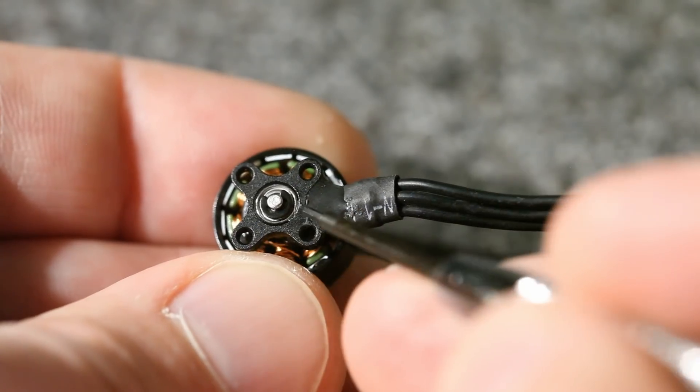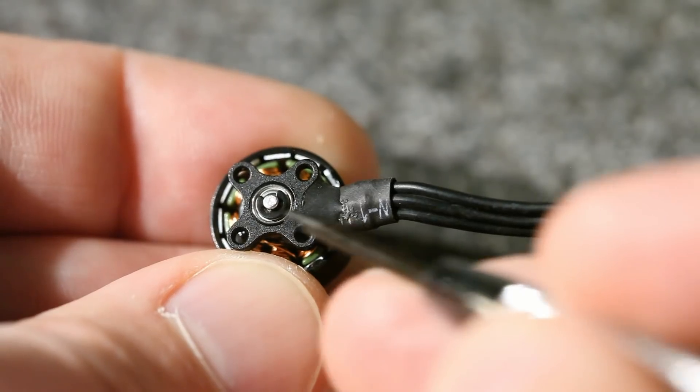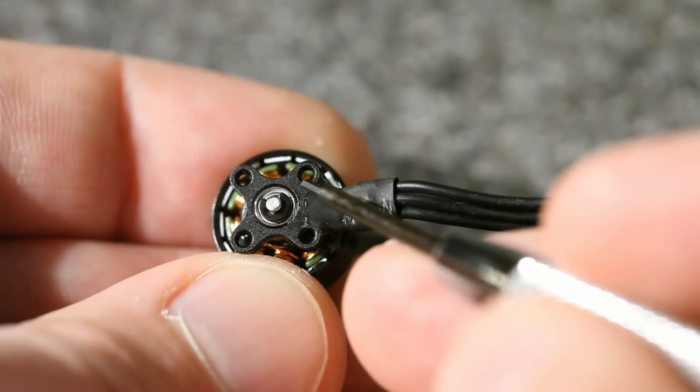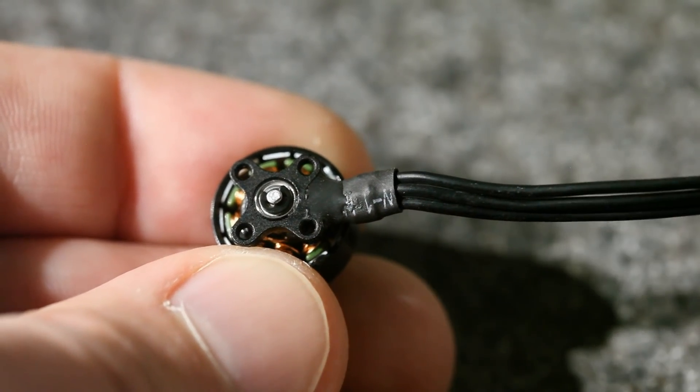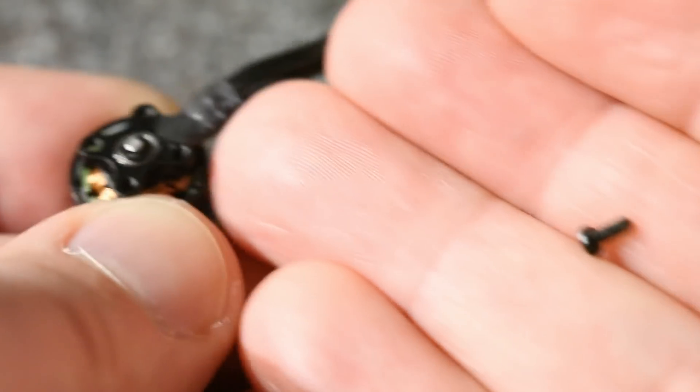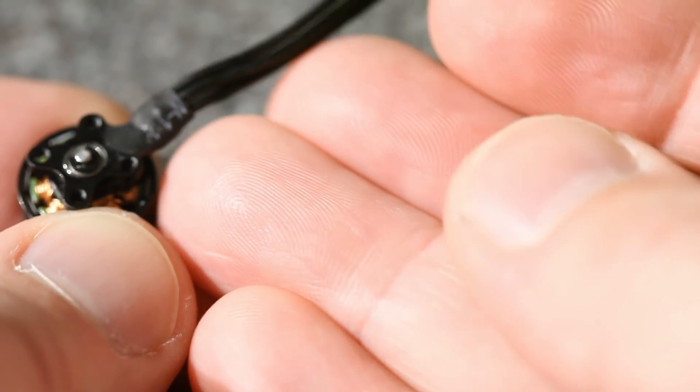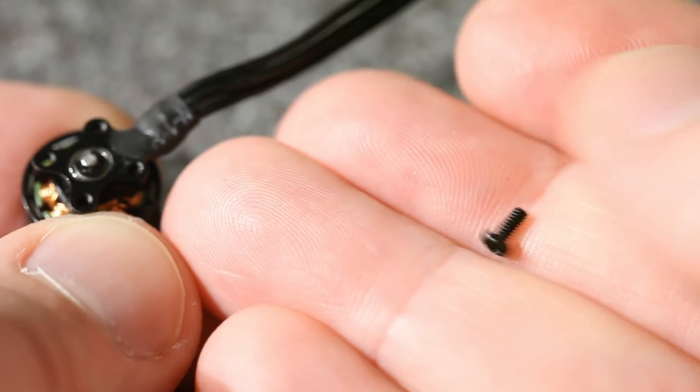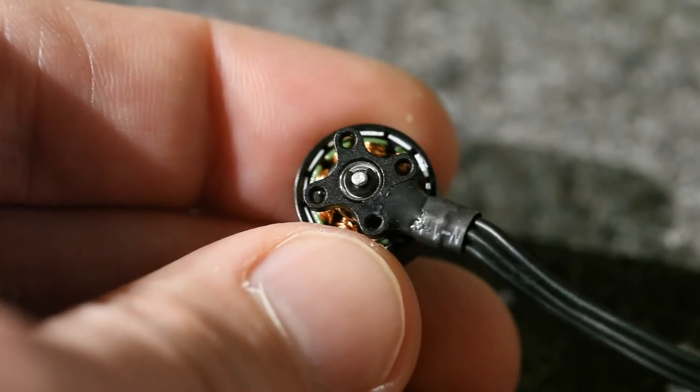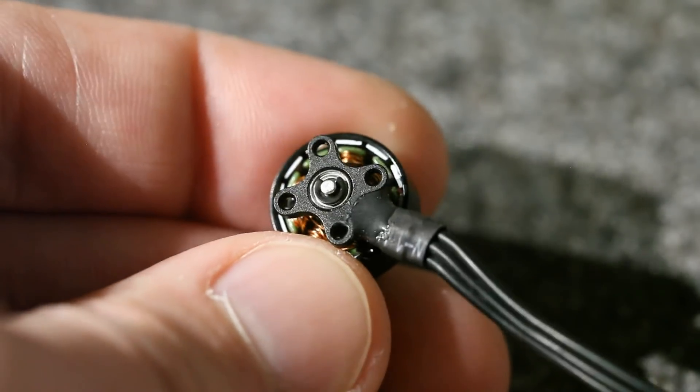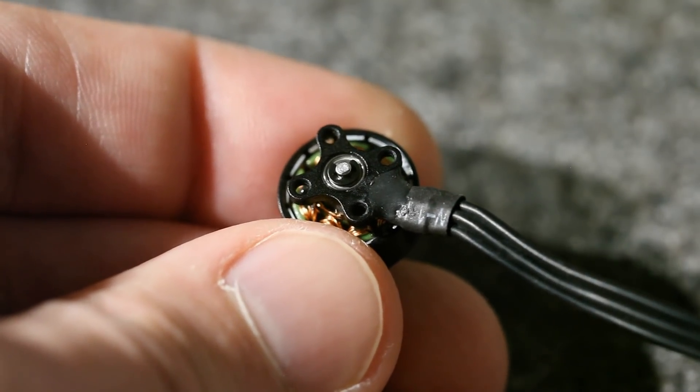The foot has the four-hole mounting pattern, which is standard on motors in this size, 9 millimeters diagonally, but these are not M2 screws. They're M1.6 screws, which look like this. That's the same screw that was used on the original 75X motor. Having a smaller screw saves a little bit of weight, but it's a less common size if you need to find replacements.